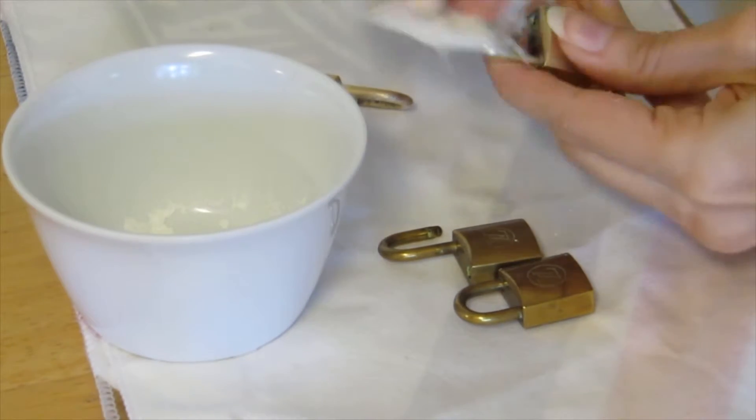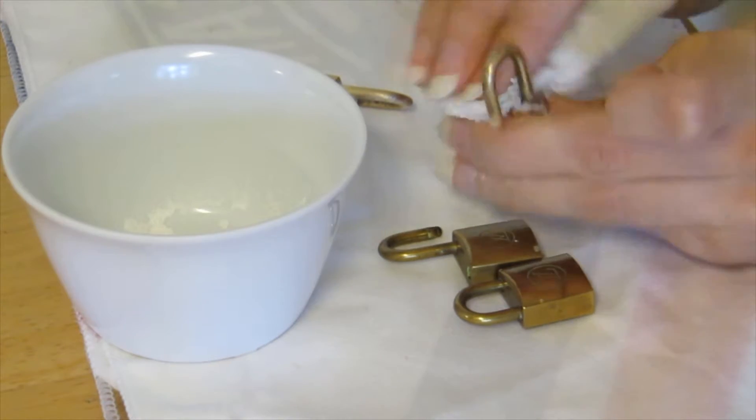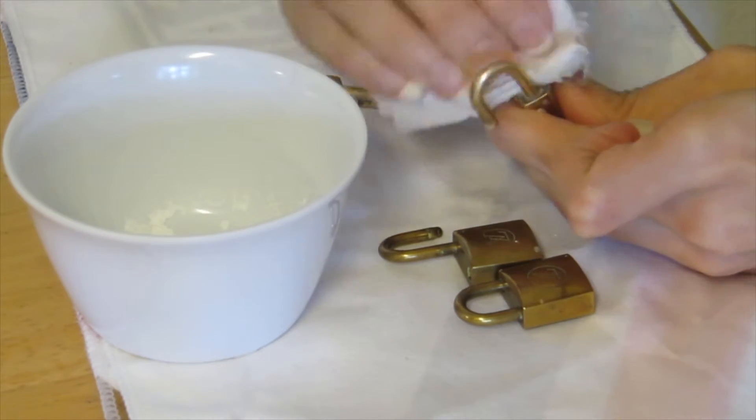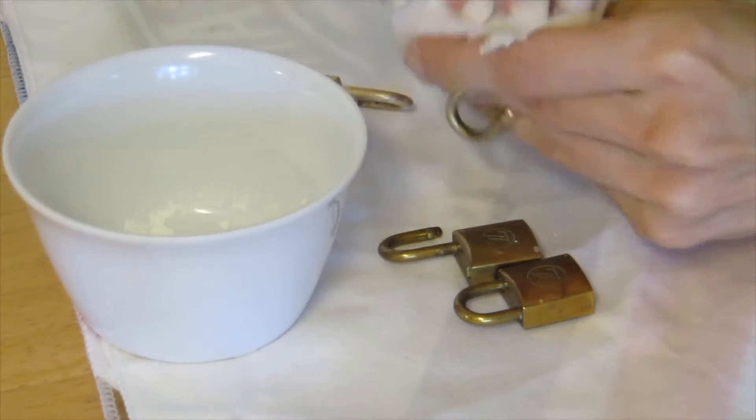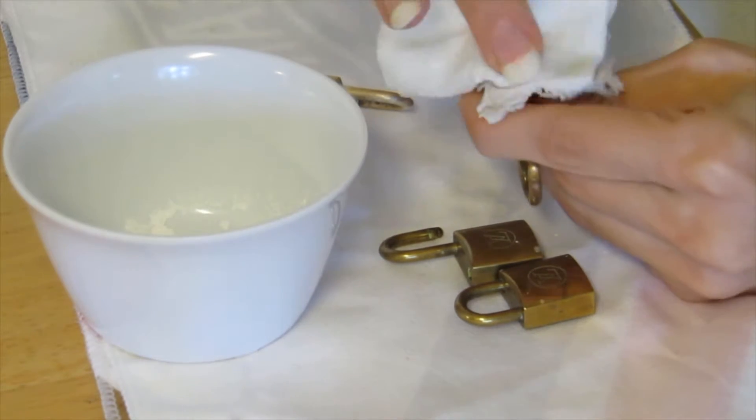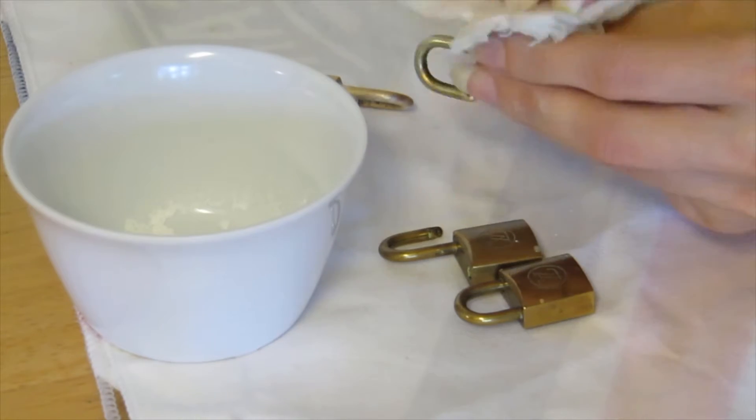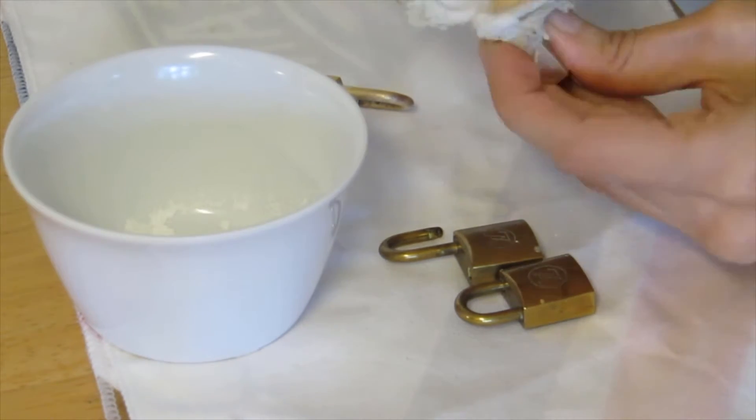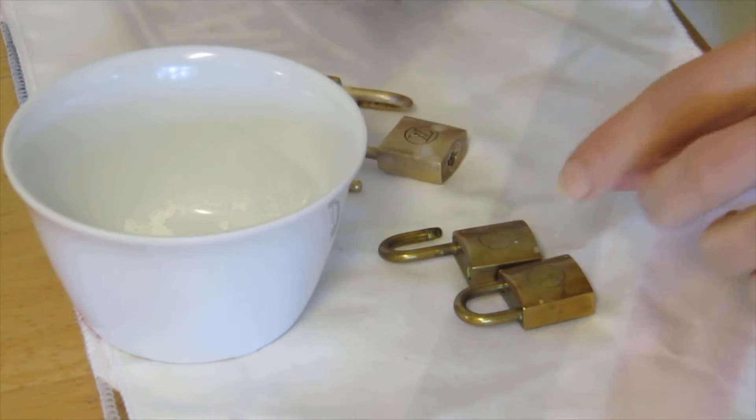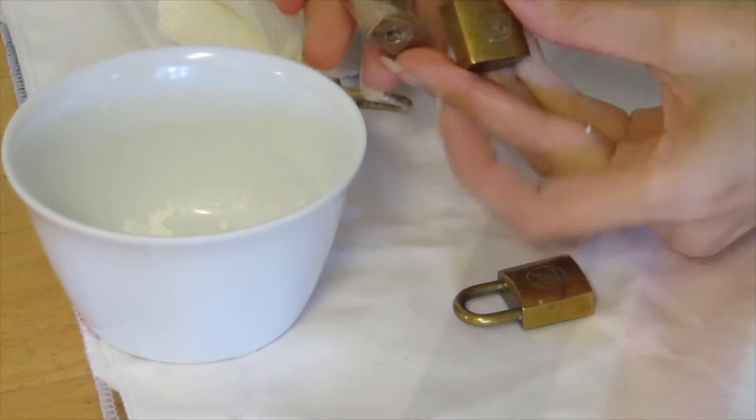This is like the simplest method that I've come across to clean locks. It's faster and easier than Brasso and way cheaper too because the Bar Keeper's Friend, that big container, I believe was only like $2. Look at this quick before and after.